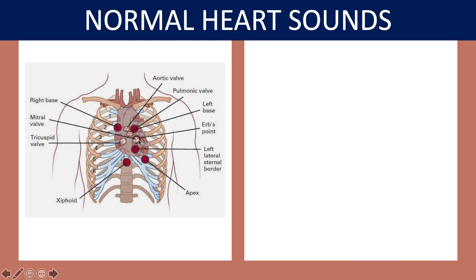Then you have the third point, also known as Erb's point. Erb's point directly lies over the mitral valve. Then there is a fourth point just directly underneath. So points one, two on the left side, then two, three, and four — the third known as Erb's point — lie directly in line with each other in the second, third, and then fourth intercostal spaces.